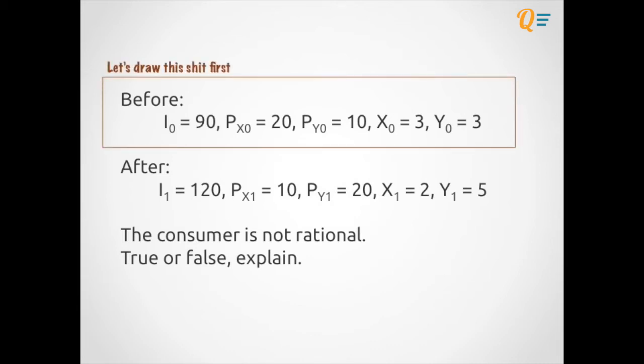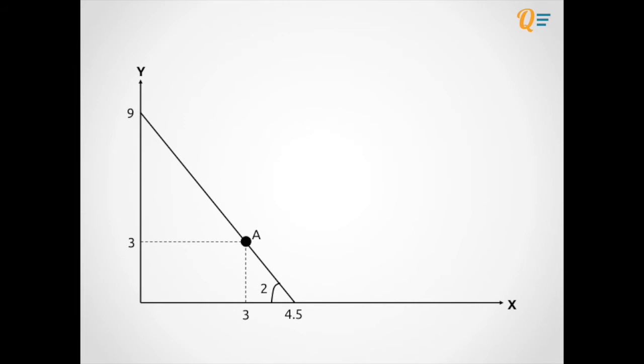Now that you understand what rationality is and what it means to be rational, let's go back to the question. What we're going to do now is draw the before situation onto a graph. Basically, we're going to be drawing the budget constraint, and this can be easily done by identifying what are the vertical and horizontal intercepts. The intercepts of both axes represent the real income in terms of good X and good Y. To find the intercept for the horizontal axis, you just have to take the income divided by the price of X, which is 90 over 20, you get 4.5. You do the same for the Y intercept and you're going to get 9. So on the graph it's going to look just like this.